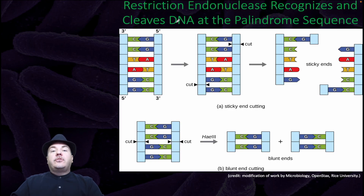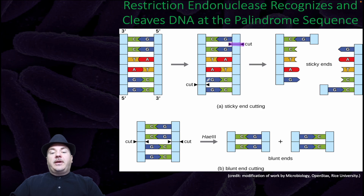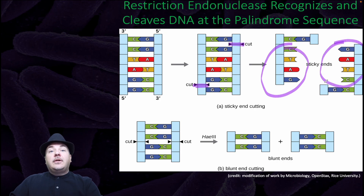Here's an example of how a restriction endonuclease would work. They work at a palindrome. So if you're going from five prime to three prime and you read it, it reads GGATCC. The other strand from five prime to three prime also reads GGATCC — so that's a palindrome. A particular restriction endonuclease would recognize this palindrome and cut between the two G bases on both strands. That would then leave sticky ends — a single-stranded overhang on each of the double strands that were left over. These are called sticky ends because they want to re-hydrogen bond to complementary base pair with their complementary sequence.